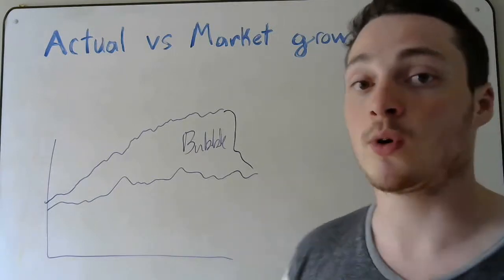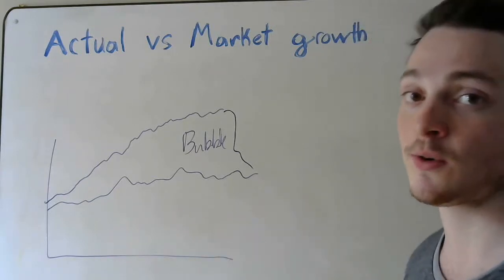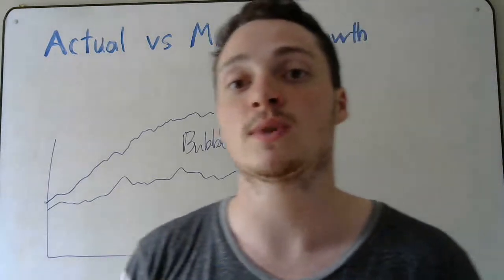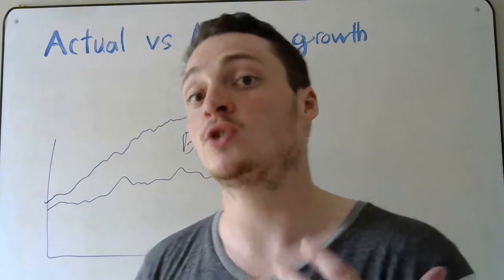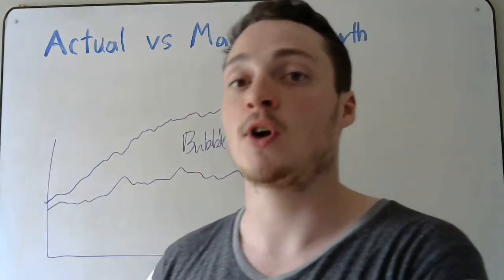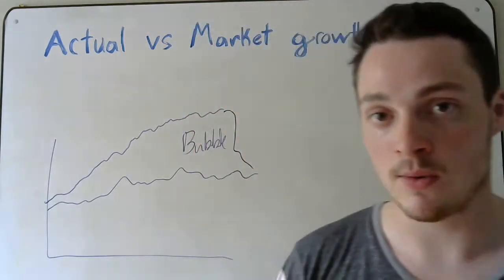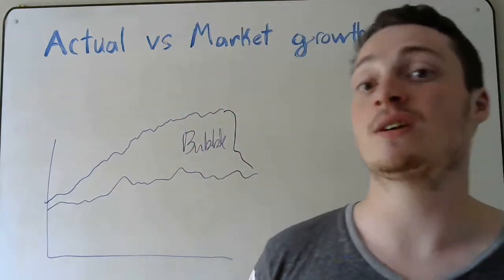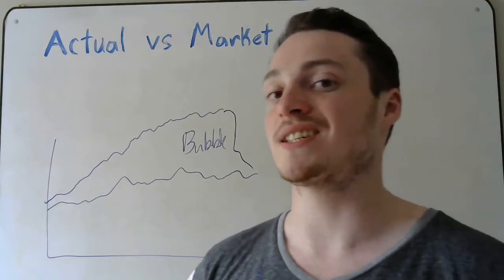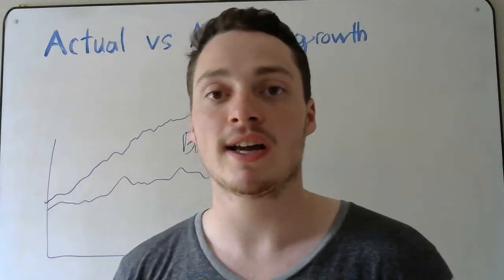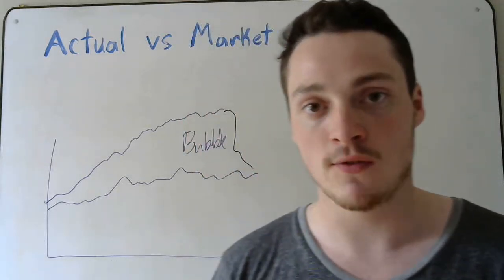When the bubble pops, that's when you typically see crashes — it comes back down to reality, back down to the actual growth, or even goes further below. That's when you see things like the 2001 dot-com crash. The internet was first really starting to take off, and people were buying domains for various things.